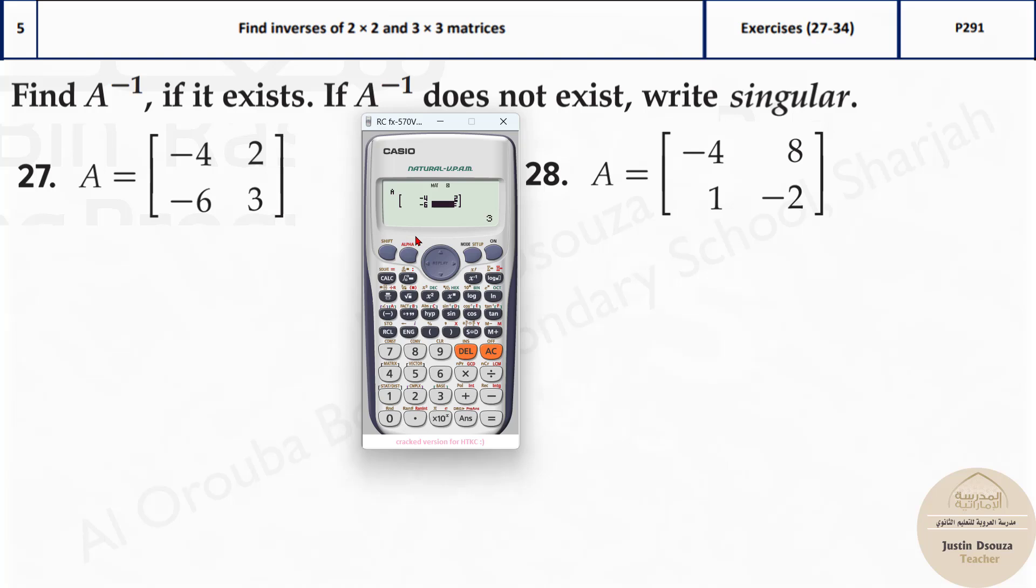Once you do it press equal to and minus 6 equals to 3. Now once all are typed in, once you are pressed equal to, you should press AC or on. It's better to go with AC. Now all clear, you're back.